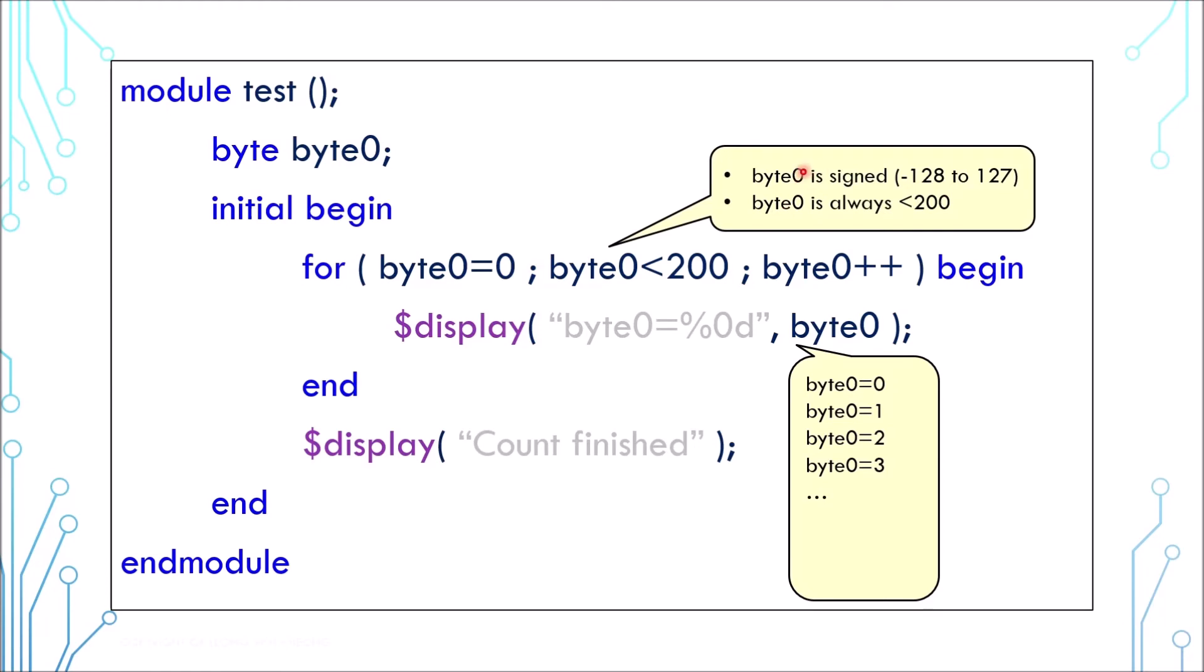Well, byte is 8 bits in width, but it does not range from 0 to 255 because it is a signed data type—it ranges from -128 to 127. This counter will count from 0 to 127 and then loop back to -128 and continue, and therefore it is always smaller than 200. Thus, the loop will never end and the final display will never happen. One way to resolve this is to use a wider type or use the keyword unsigned. An unsigned byte value ranges from 0 to 255.